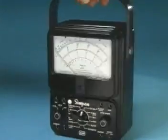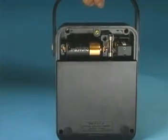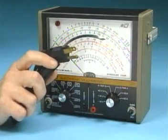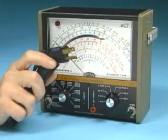Portable VOMs have one or more batteries inside to provide the current for the ohmmeter. Electronic multimeters have a power supply which provides the current that is fed out by the ohmmeter.